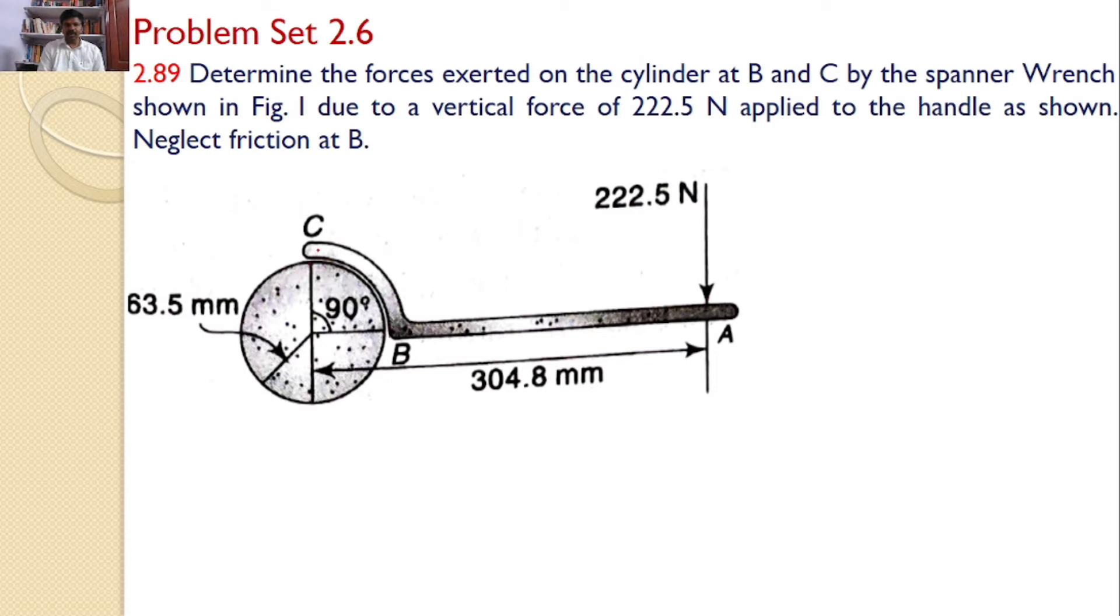By considering the free body diagram of the spanner wrench alone, the forces are Rb. This is the force acting on the wrench at B by this cylinder in only one direction. But at C, I can find two reactions, RCH and RCV. These are the forces acting on the wrench, and of course, 222.5 Newtons force acting at point A.